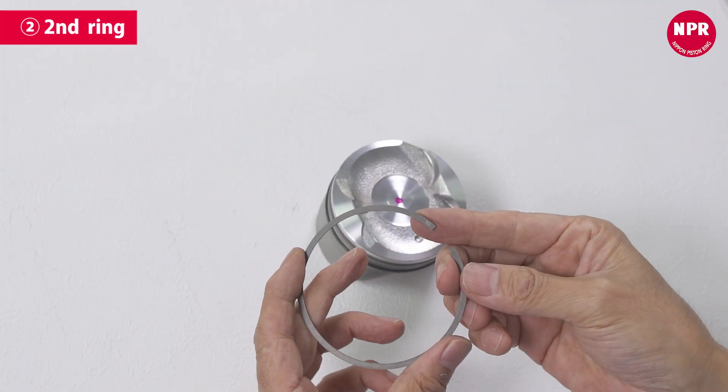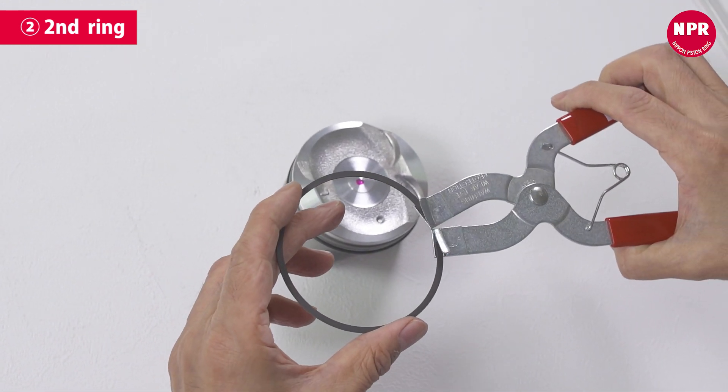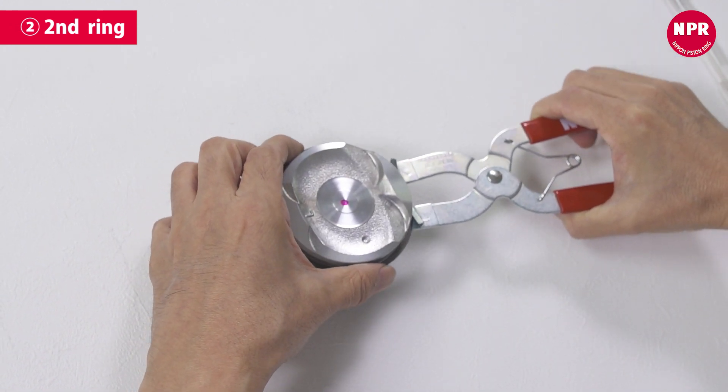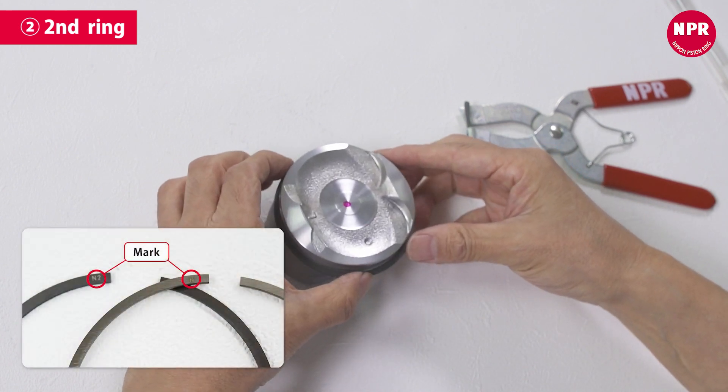First, use the ring tool to widen the second ring's end gap and support the ends with your other hand. Pass the second ring over the piston's top land and second land and insert it into the ring groove. Always attach the rings with the markings pointed towards the upper side.